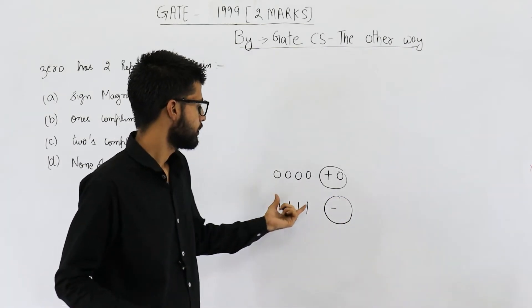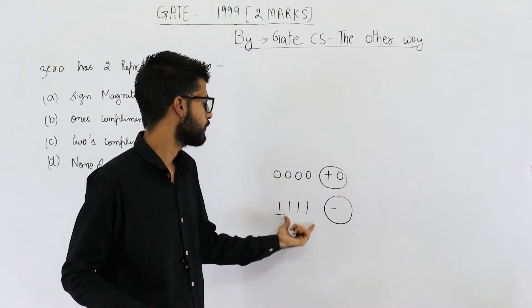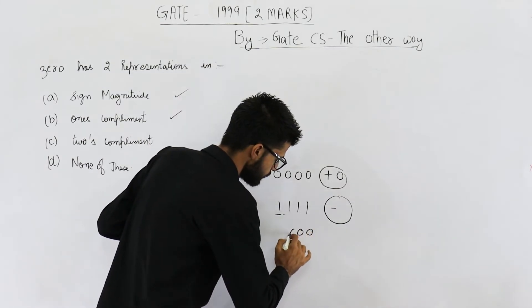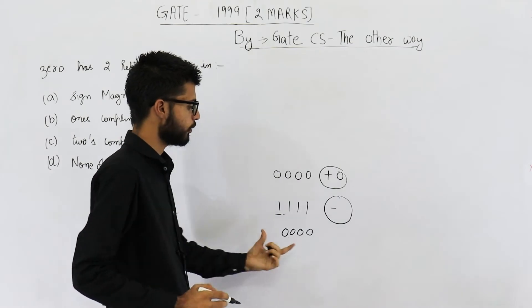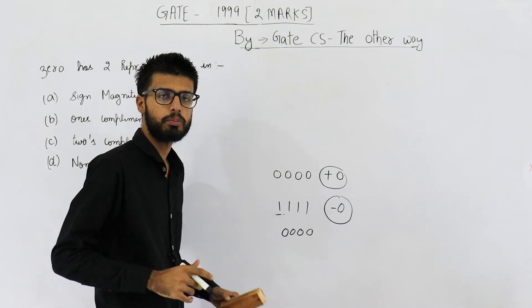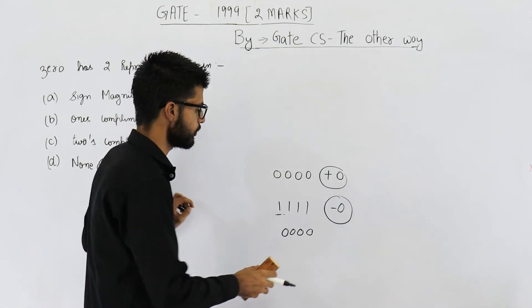What is the actual number? Just take one's complement of this. So one's complement will be zero, zero, zero, zero. So all zeros mean zero. So this all ones, it actually represents minus zero.